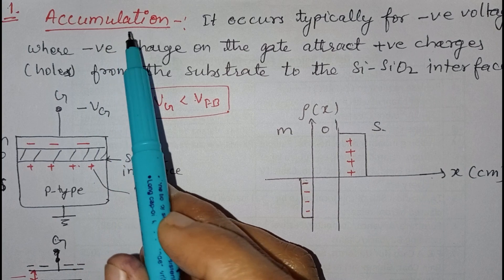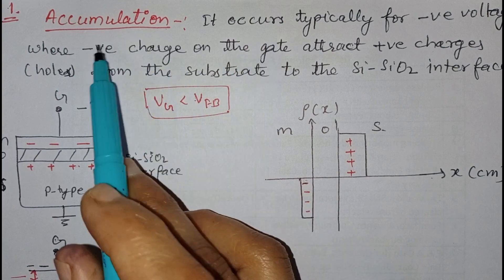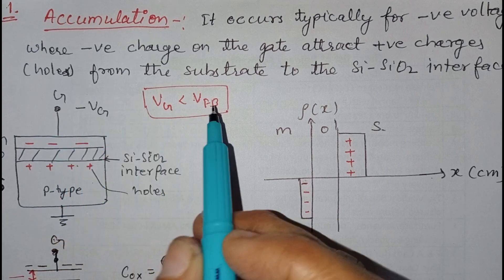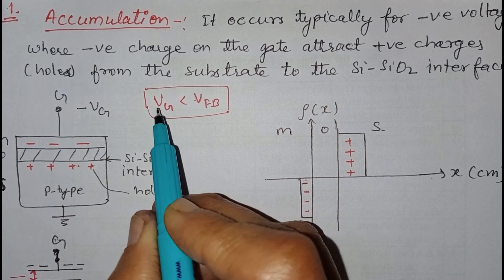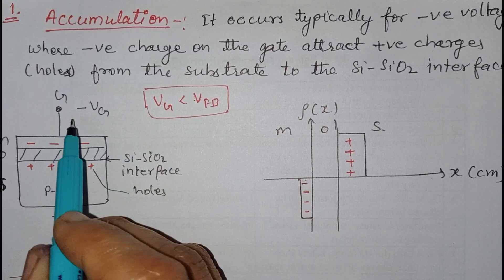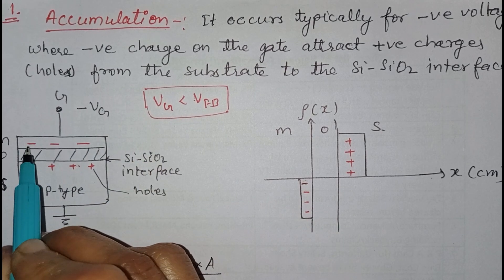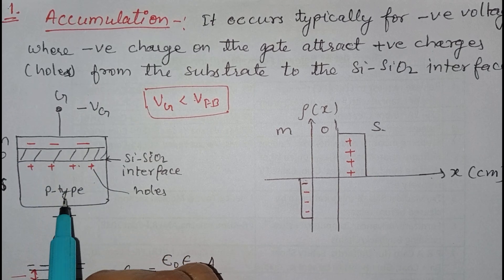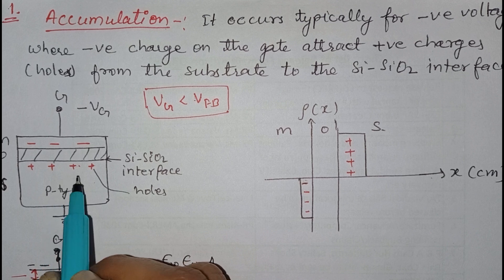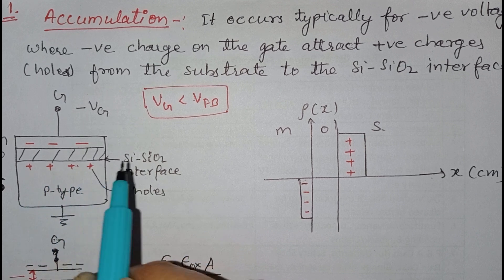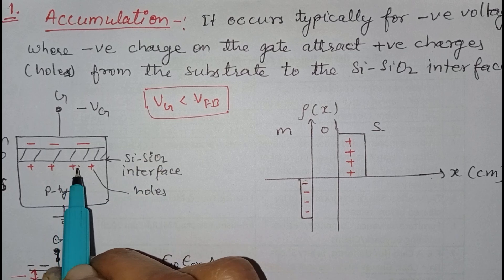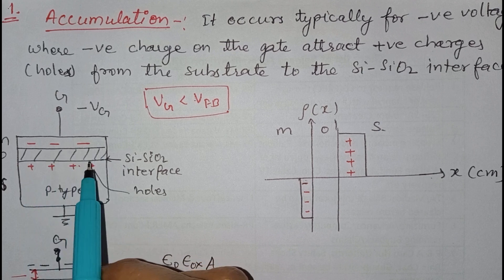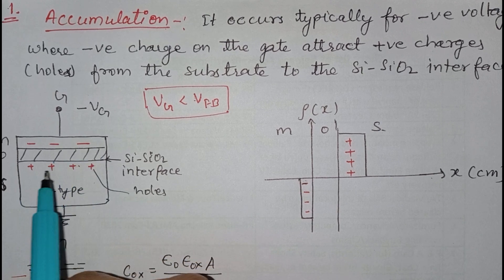Now we will discuss the accumulation mode of the MOS capacitor. In accumulation mode, we apply a gate voltage that is more negative than the flat band voltage, meaning Vg is less than V_FB. When we apply this negative voltage, the metal plate becomes negatively charged, and this negative charge attracts positive holes from the substrate. Due to the attraction, they collect at the silicon–silicon dioxide interface.